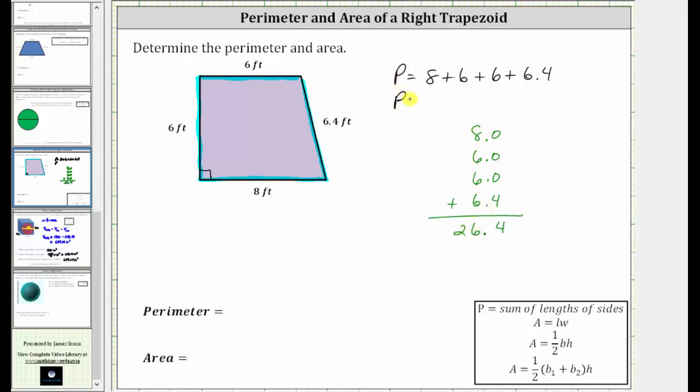The perimeter of the right trapezoid is 26.4 feet.